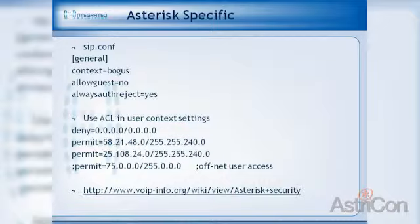In Asterisk specifically, in the general section you always want to put a context. That's where anybody can access your system. A bogus context means that if they do successfully gain access through the general context, you don't want them routable to your internal dial plan or outbound dial plan — you just stick them in a place that goes nowhere.